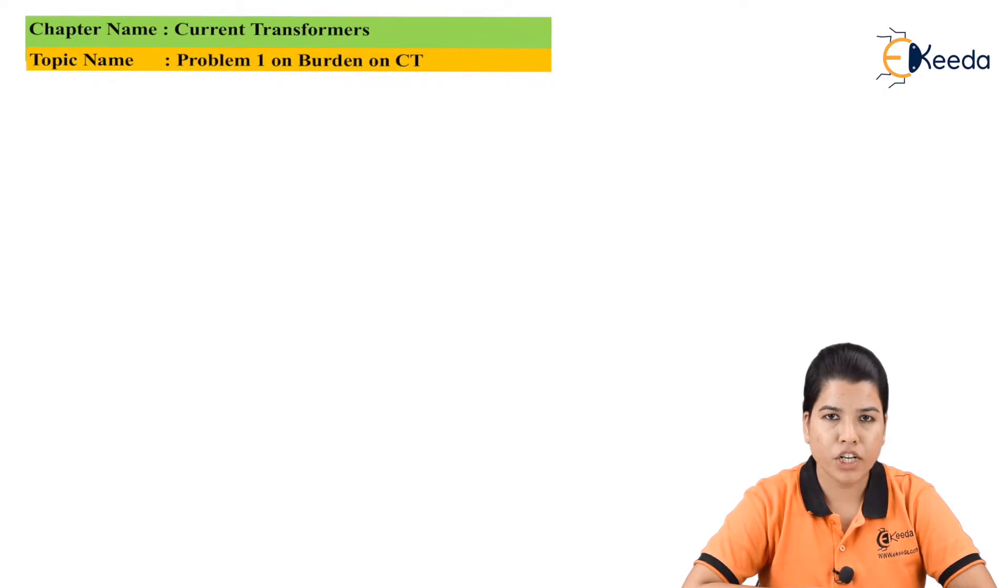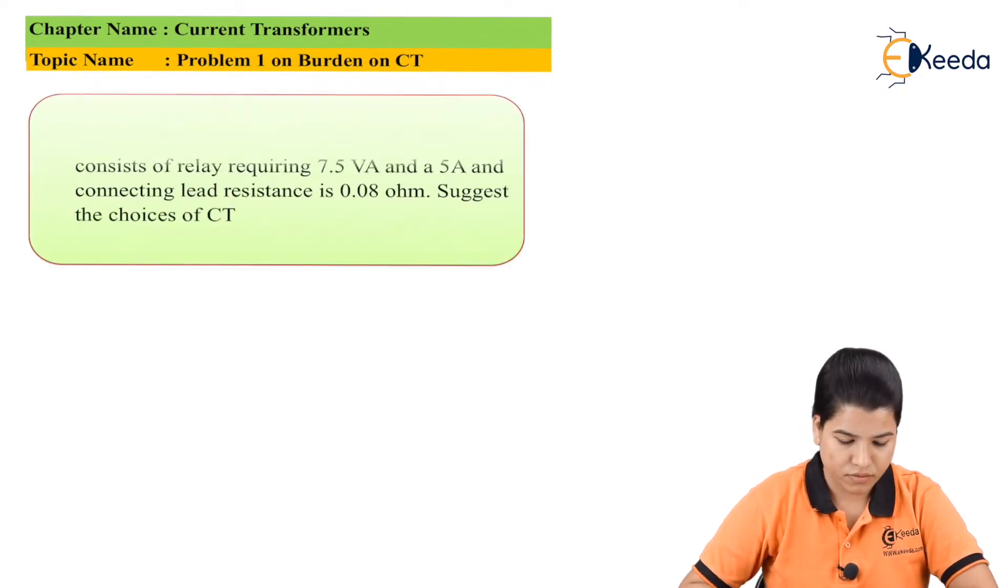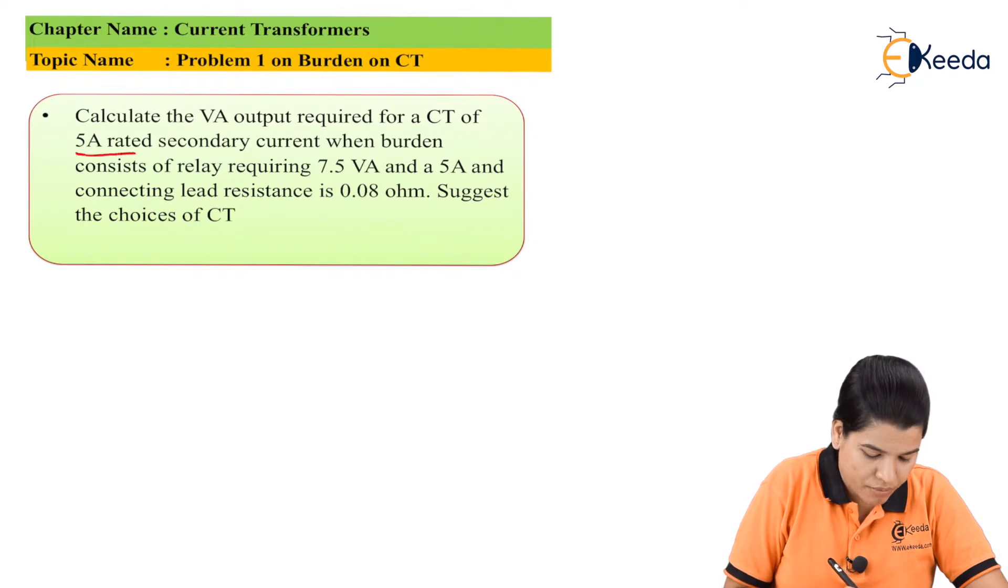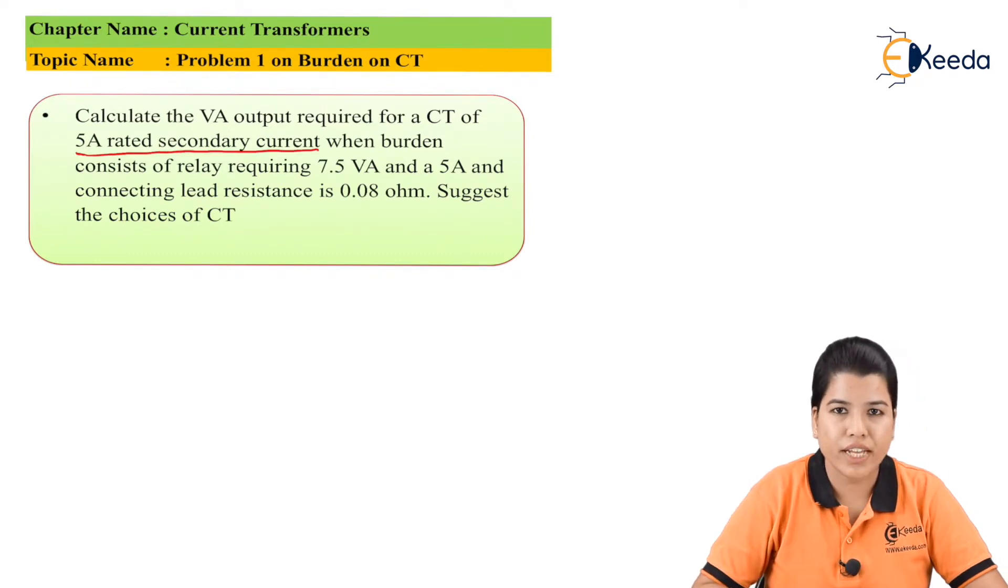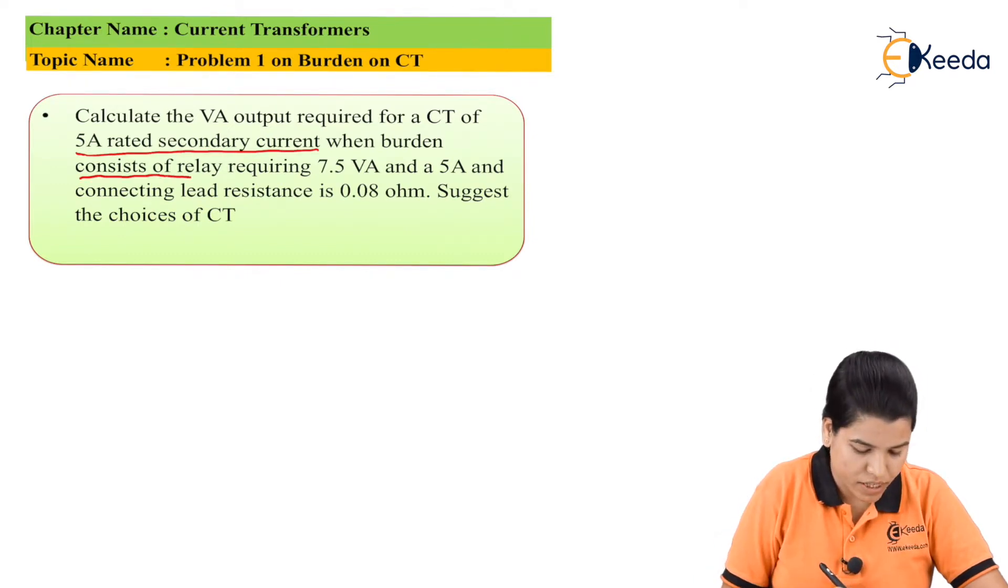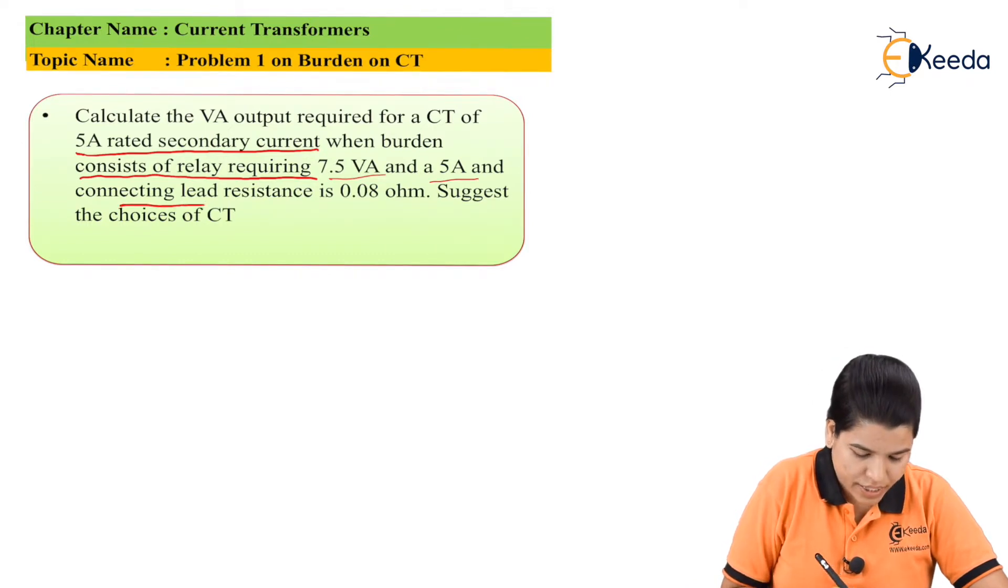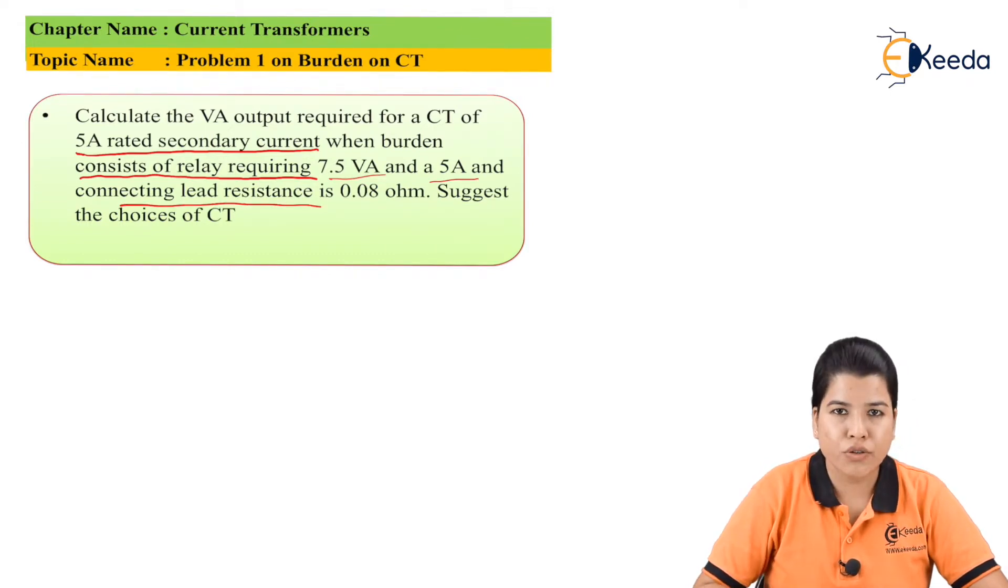The problem based on the burden of CT can be stated as: Calculate the VA output required for the CT of 5A rated secondary current when burden consists of relay requiring 7.5 VA and 5A connecting lead resistance is 0.08 ohm. Suggest the choices of CT.